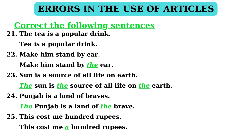In sentence 23: 'Sun is a source of all life on earth.' — Again, an incorrect statement. The correct statement is: 'The sun is the source of all life on the earth.' This is because article 'the' is to be used before common nouns which are names of things unique of their kind. In sentence 24: 'Punjab is a land of braves.' — Incorrect statement. The correct statement is: 'The Punjab is a land of the brave.' Definite article 'the' is to be used before the name of states or countries having a descriptive name.